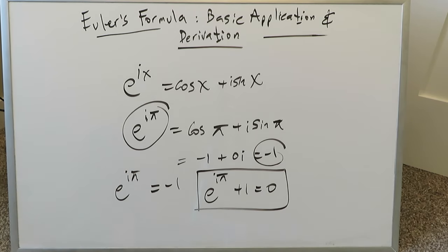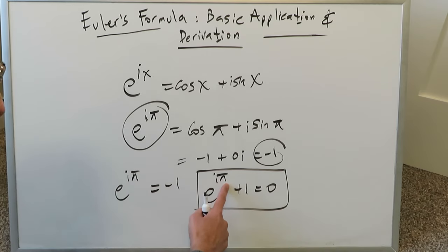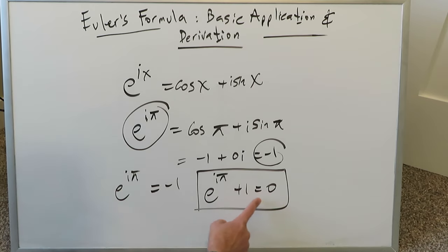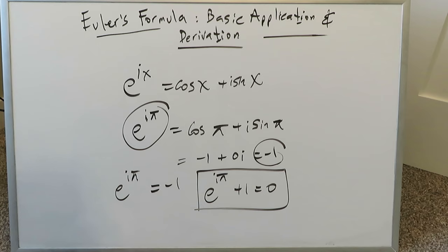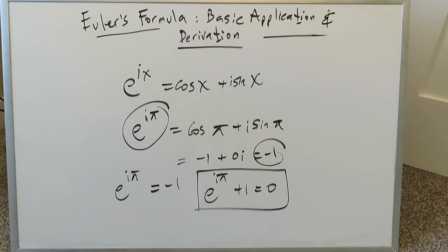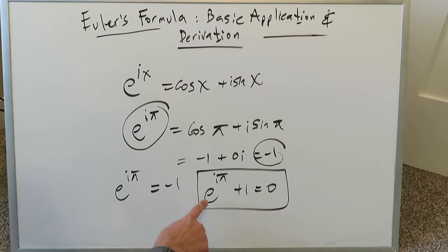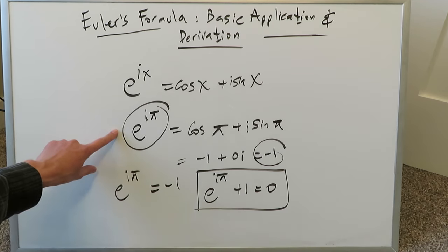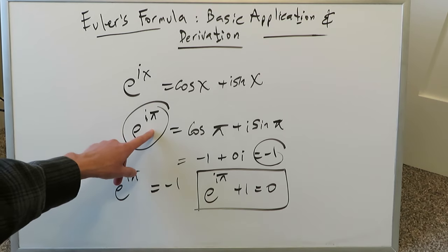And here you have that famous equation of mathematics which shows five different numbers: 0, 1, π, an imaginary number i, and e. You have several different types of numbers — a whole number, a natural number, irrational numbers, and an imaginary number. Some of these are also rational numbers and real numbers. This is one of the most famous equations of mathematics: e, i, π, 1, and 0 represented in one equation. Now you've seen where it comes from — it comes from Euler's formula.